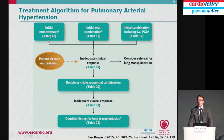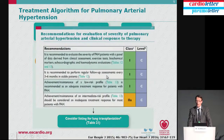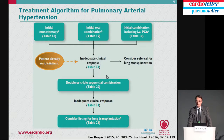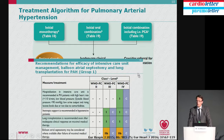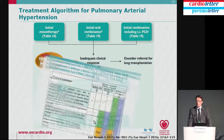For a patient already on treatment, you will assess the clinical response. For patients with no good treatment response, sequential combination therapy should be considered. If they are eligible for transplantation, they should be considered for lung transplantation — maybe not listed immediately, but at least considered — because lack of initial response is a marker of future difficulties. Double or triple combination therapy followed by lung transplantation is recommended after inadequate response on maximum medical therapy in eligible patients.